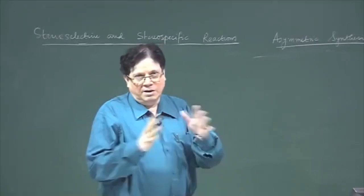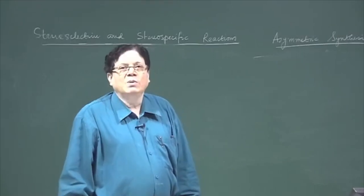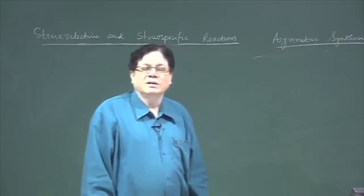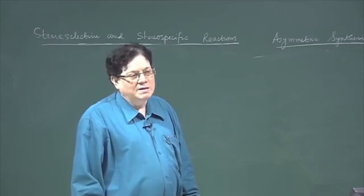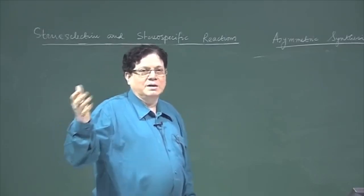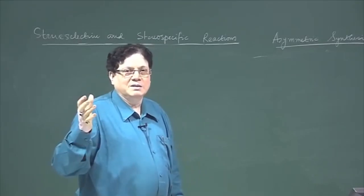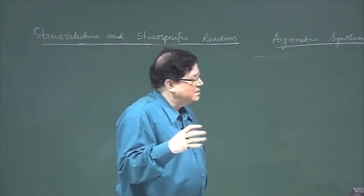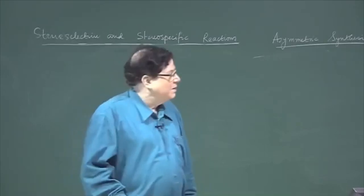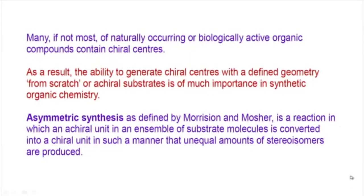In true sense they are all different, but in reality what happens is that stereoselectivity is most often clubbed with asymmetric synthesis. The actual asymmetric synthesis definition is that whenever an achiral center is converted into a chiral center and if you get one configuration in excess over the other, that is asymmetric synthesis. Many scientists call it a stereoselective synthesis - that you are making one stereoisomer more over the other. I will show you a few slides to impress upon you again the importance of asymmetric synthesis, and the definitions are also included here.